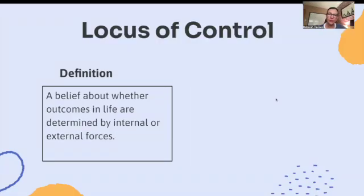Now let's look at Locus of Control. As you can see, there's no example here, and I'm going to explain why in a minute. The definition is: a belief about whether outcomes in life are determined by internal or external factors. In the next slide I'm going to give you the definition and example of internal locus of control and external locus of control.